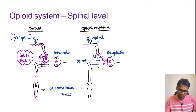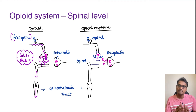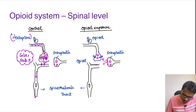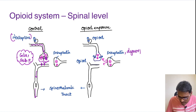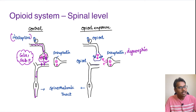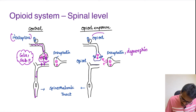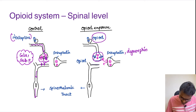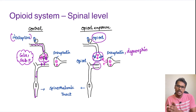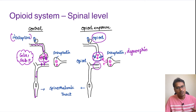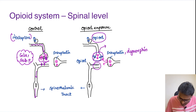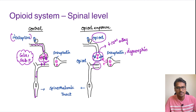The opioid system acts at different levels in the body. Not only exogenous opiates like morphine, but we also have endogenous opiates naturally present in the body — examples are enkephalins and dynorphins. The opioid system acts at the dorsal root ganglia, pre-synaptic terminal, and post-synaptic terminal. Opioid receptors are strategically located at both pre- and post-synaptic terminals. At the pre-synaptic terminal, opioids decrease calcium entry, which in turn decreases exocytosis of neurotransmitters.